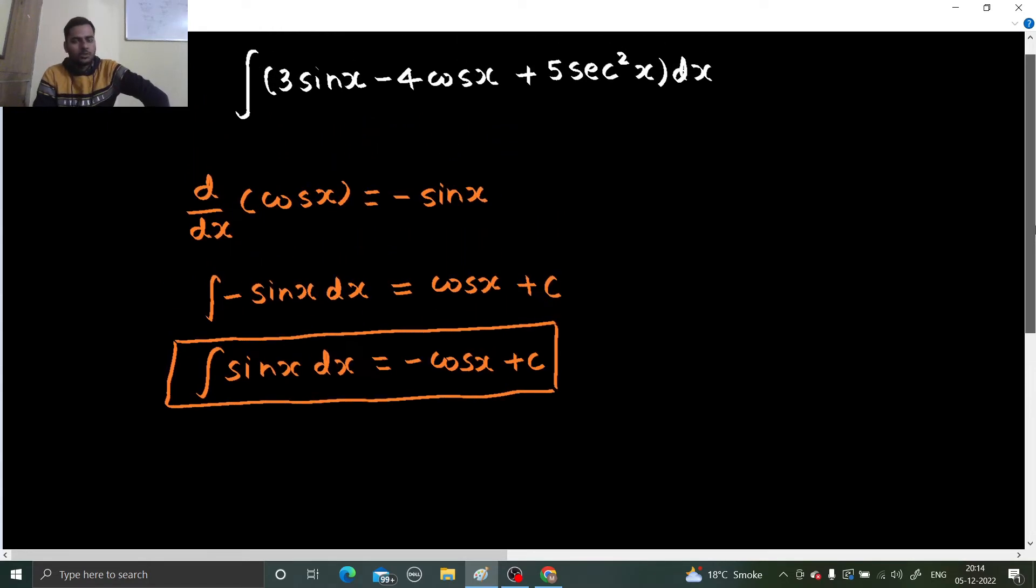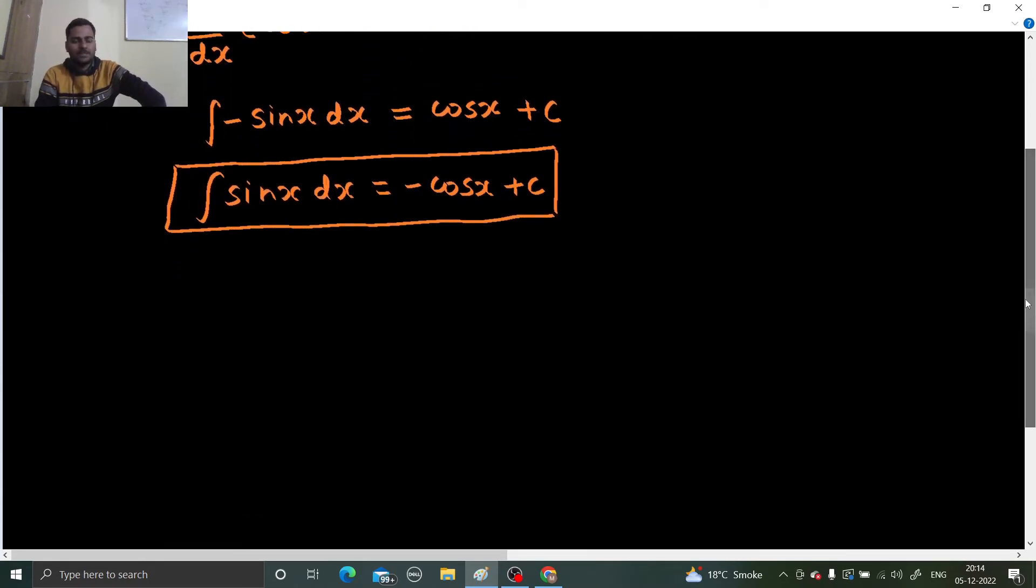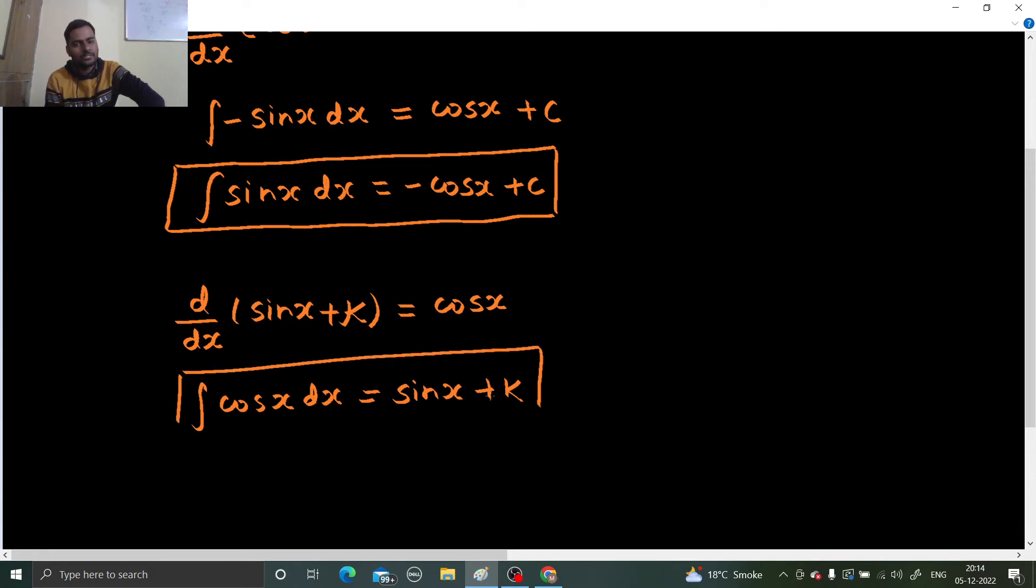So now the second one is cos x. Similar approach. We know the derivative of sin x, or to say on simpler basis, sin x plus k, because any constant would have been there, the derivative is 0, gives you cos x. So if you do the reverse of this, if you integrate cos x dx, you are going to get sin x plus k. There you get the second formula to be noted in your notebook or that list which you are making.